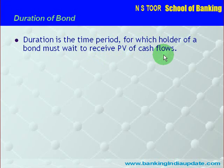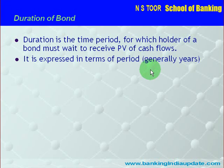So every bond generates some cash flow, and duration is that time period for which the holder of bond must wait to receive present value of the cash flows. Now these cash flows are in the form of coupon amounts, or these cash flows are in the form of maturity value or the face value to be received on maturity.